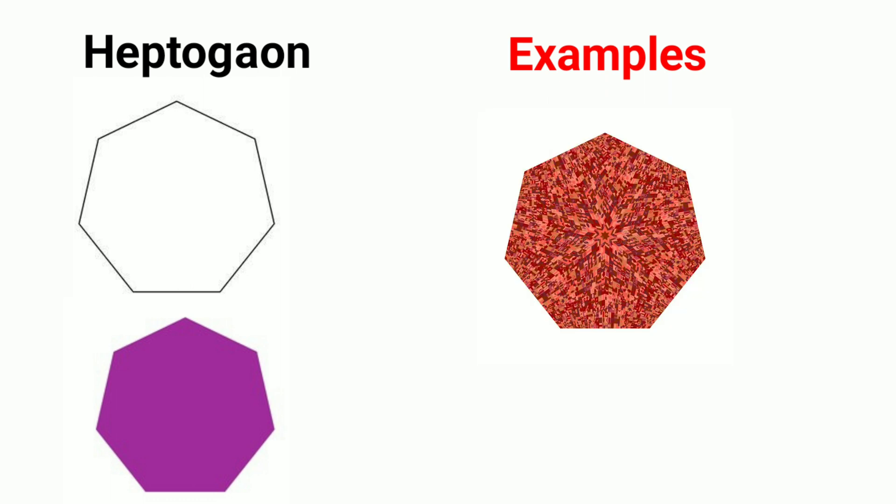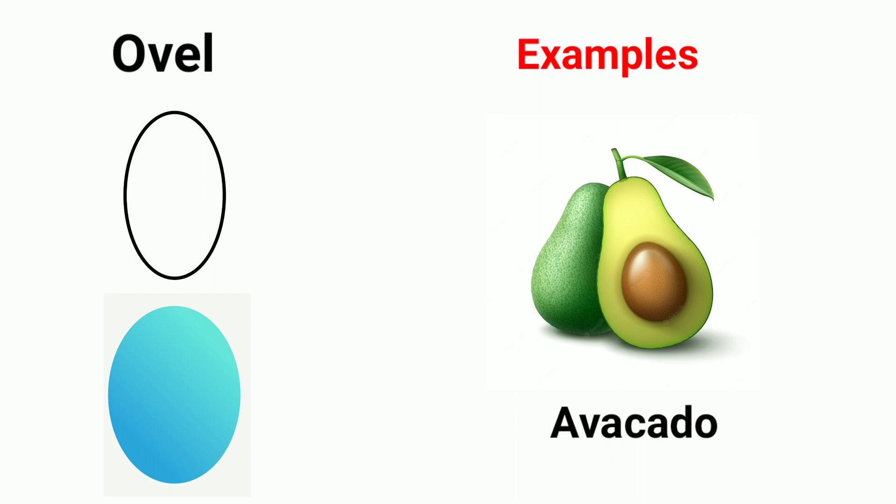Umbrella. Oval. Examples of oval shapes: egg, avocado.